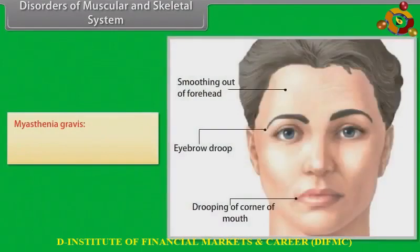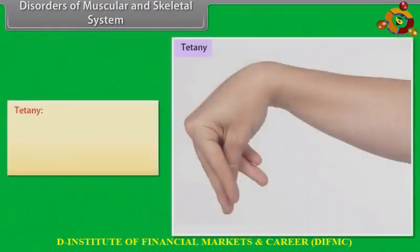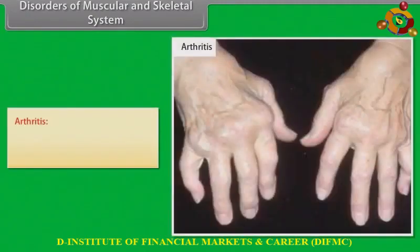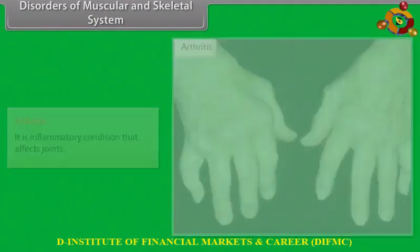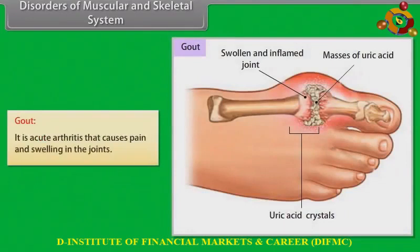Disorders of the muscular and skeletal system. Myasthenia gravis is an autoimmune disease that causes weakness of muscles. Muscular dystrophy is a group of genetic diseases due to which muscle fibers are susceptible to damage. Tetany is an abnormal condition characterized by painful muscular spasms due to faulty calcium metabolism. Arthritis is an inflammatory condition that affects joints. Osteoporosis is a disease in which the bones become extremely porous and subject to fracture. Gout is acute arthritis that causes pain and swelling in the joints.